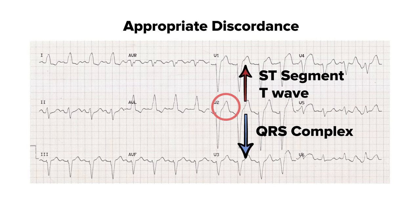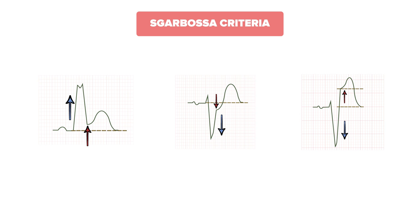This is where the Scarbosa criteria comes in. It's a tool that you can use to help you read through EKGs with left bundle branch blocks in patients you are concerned for myocardial ischemia. It's composed of three criteria on a scale from zero to five.